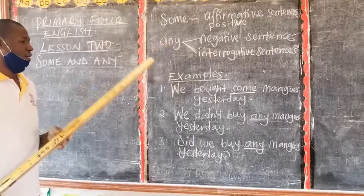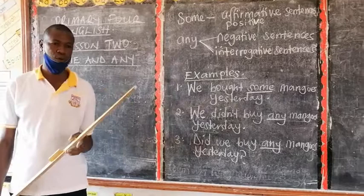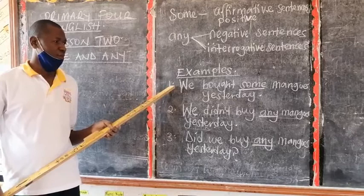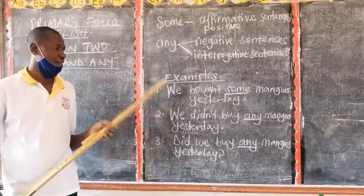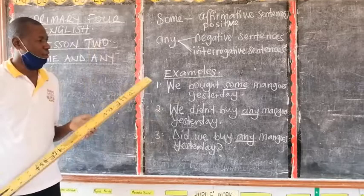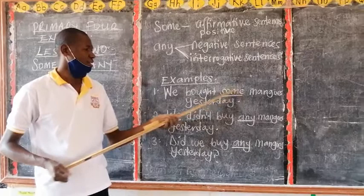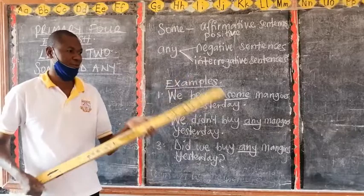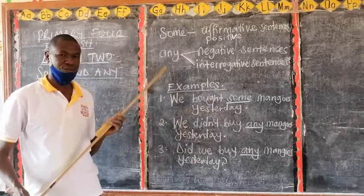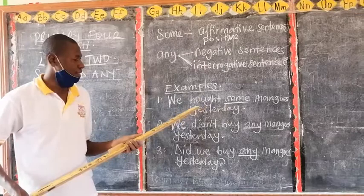We are going to look at some examples here. The first example is: We bought some mangoes yesterday. I have underlined the word some, and I have asked a question — why do you think this word some is being used in this sentence? I have used the word some here because the sentence is affirmative.